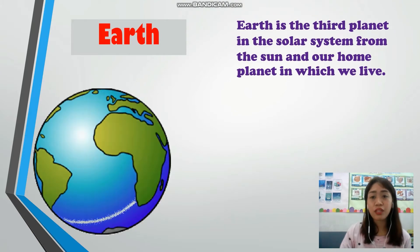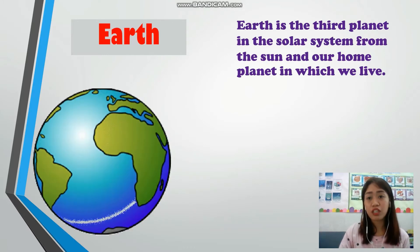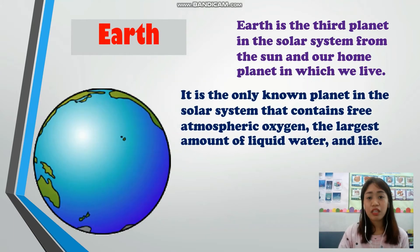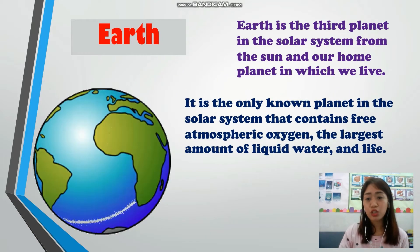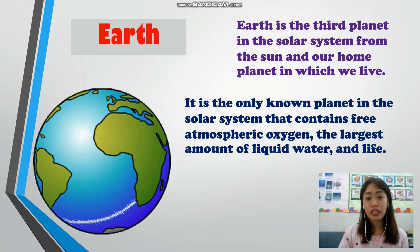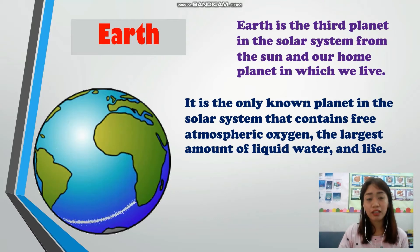Earth is the third planet in the solar system from the sun, and the home planet in which we live. It is the only known planet in the solar system that contains free atmospheric oxygen, the largest amount of liquid water, and life.